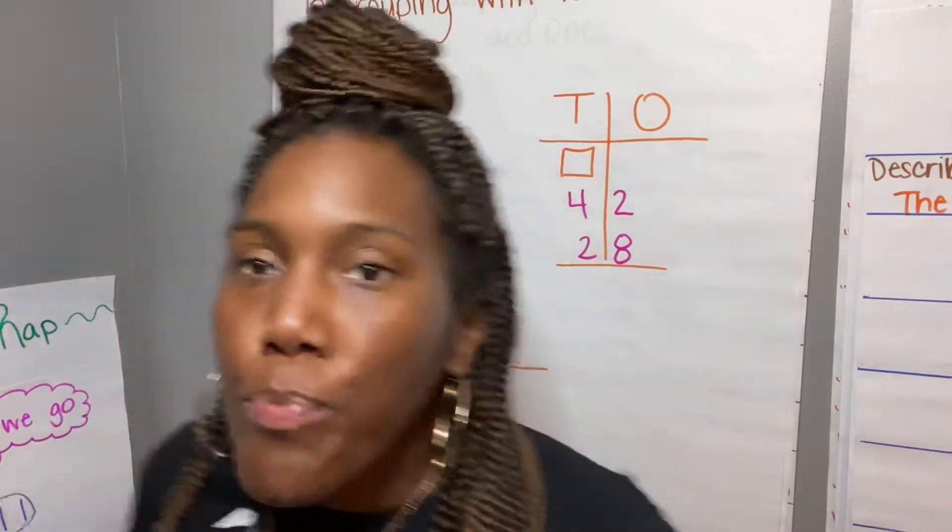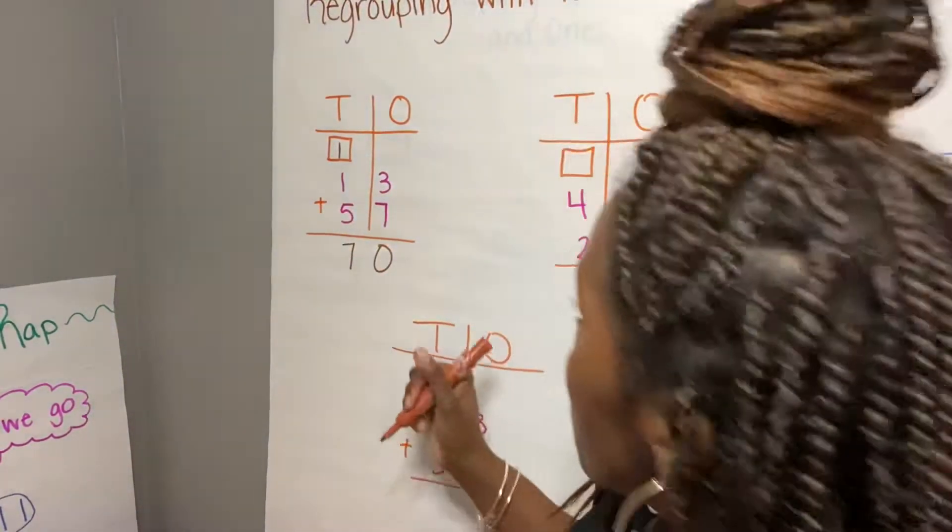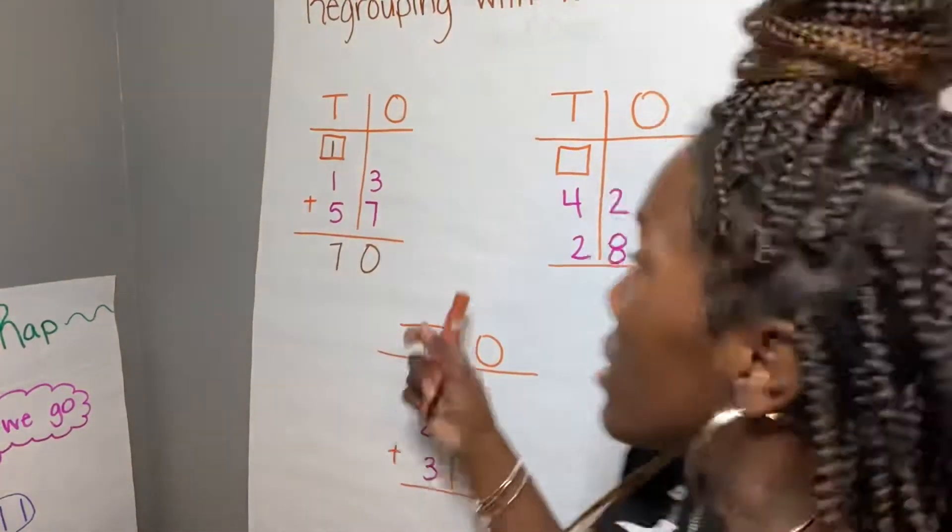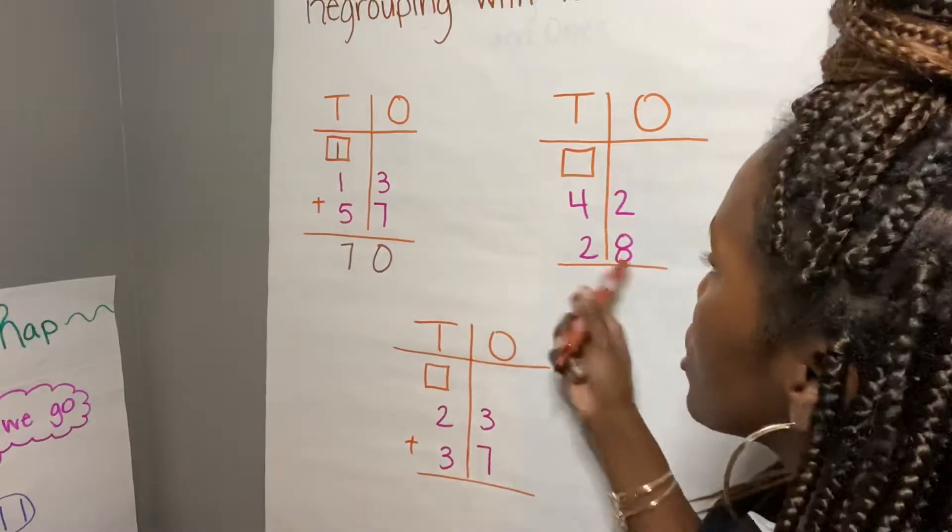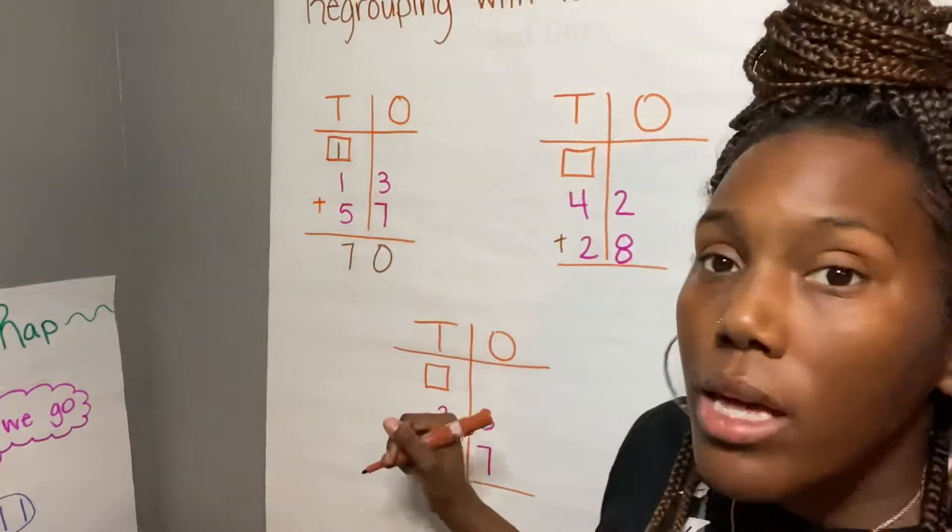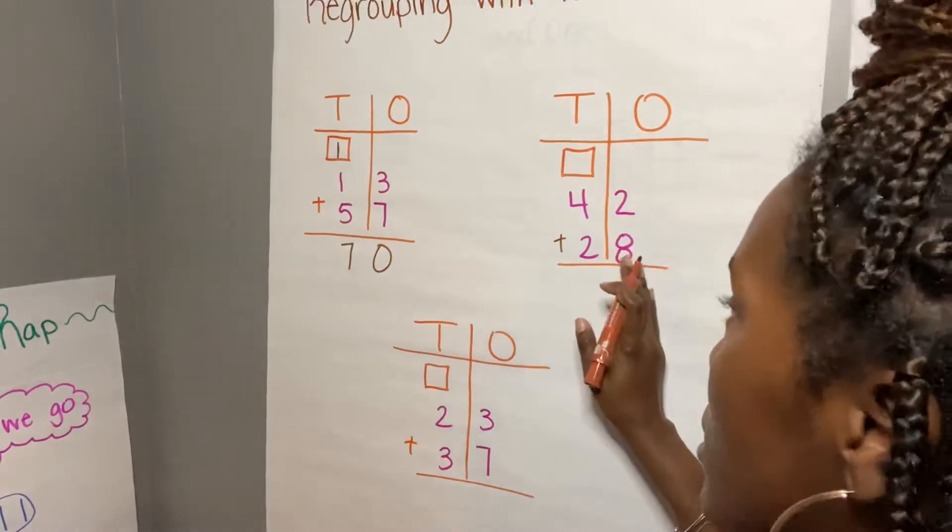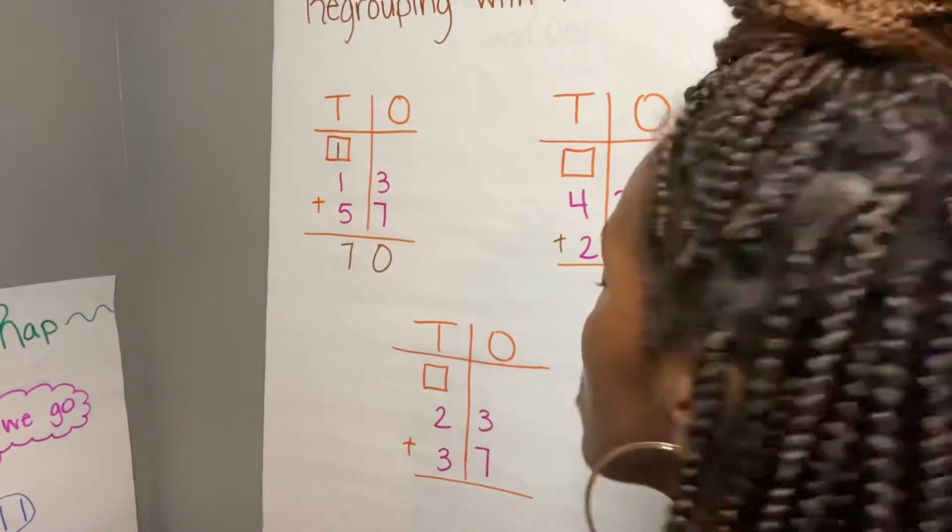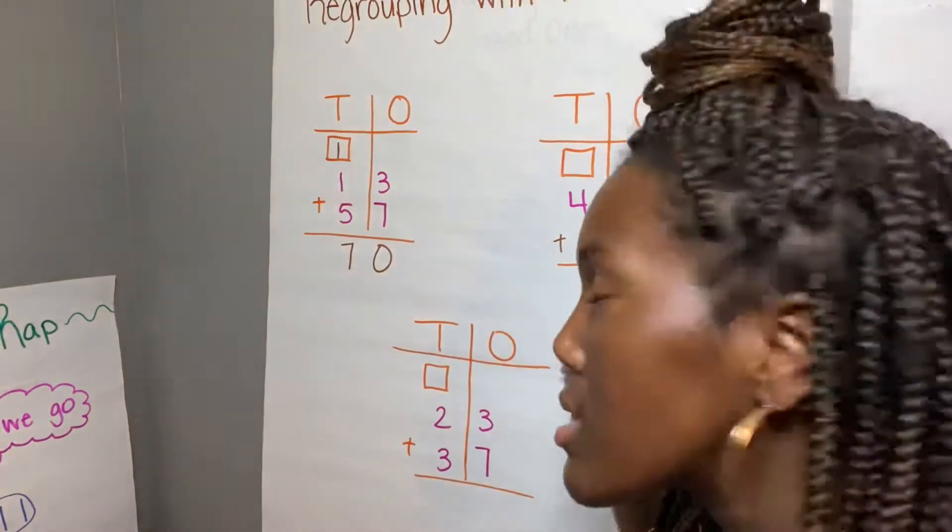Okay, remember to always check your work. It makes you sure of your answers. Okay, the next problem is 42 plus 28. Now again we're going to start in our ones place, and we know 8 plus 2 gives us 10 again.